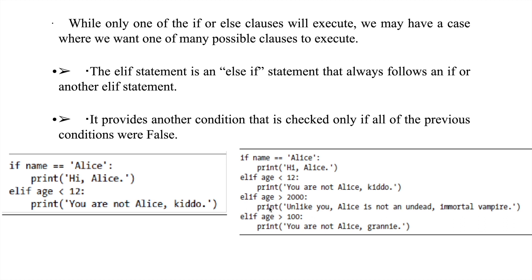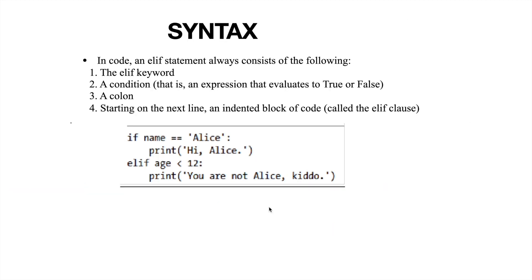Hope you're understanding. If you have any doubts, please post them in the comment section. Now, what is the syntax of the elif statement? Just like the if and else statements, elif contains a keyword. The syntax is: the elif keyword, followed by a condition — for example, age less than 12 — followed by a colon, followed by an indented block of code, such as print 'You are not Alice, kiddo'.